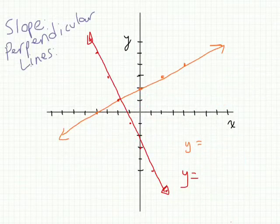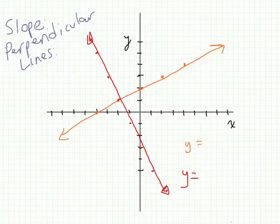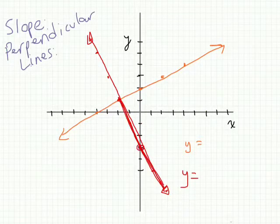Let's look at perpendicular lines. We'll do the same thing that we just did, starting with the red line this time. The red line is slightly off — it should come more like this. You can see the dot. The y-intercept is at negative 3.